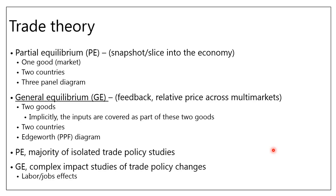Trade theory can be split into two categories. The first is called partial equilibrium — the idea that you could take a snapshot or slice of the economy and lift it out. It's distinguished primarily by one good. When we've talked about tariffs, you would have seen the export supply curve and the import demand curve. We're talking about a single good where supply comes from one country and demand from another. We put a tariff in place, measured the welfare effects, and determined who bears the burden of that tariff. That's called partial equilibrium.